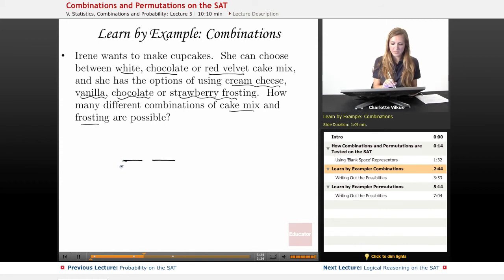And I have white, chocolate, or red velvet. So I have three options. In terms of frosting, which I can combine with those cake mixes in any sort of different way, I have cream cheese, vanilla, chocolate, or strawberry. So I have four options there. So my answer here would simply be 12.